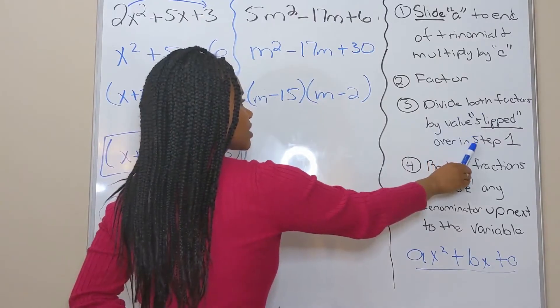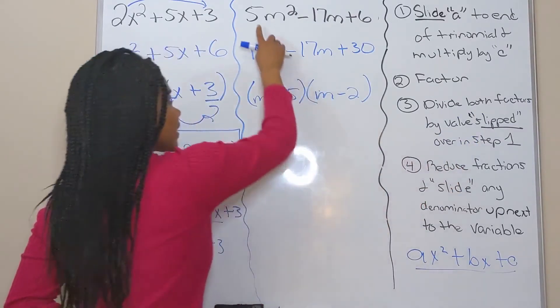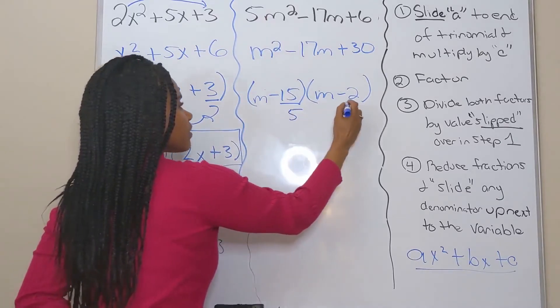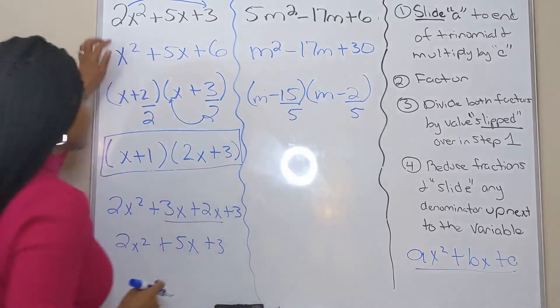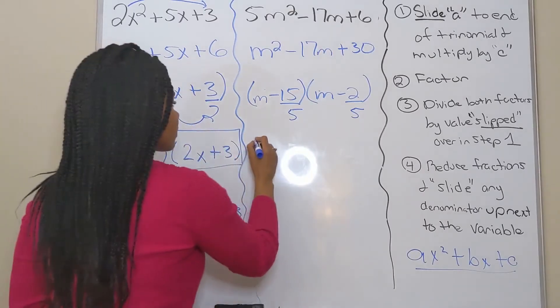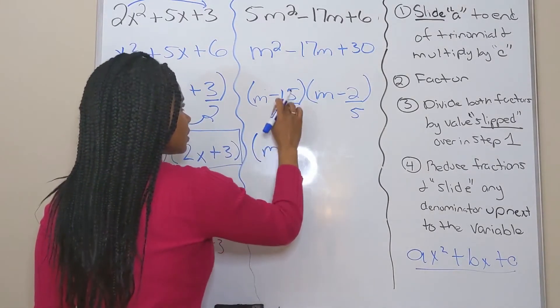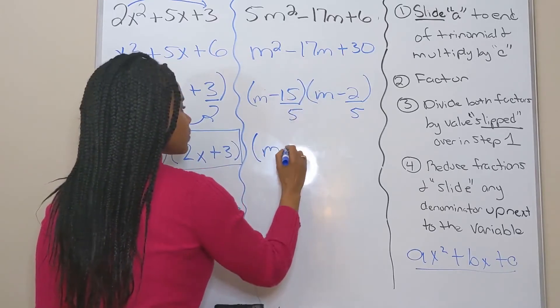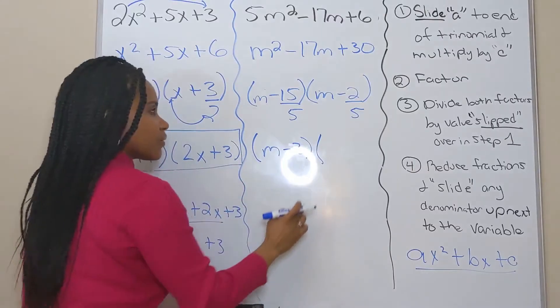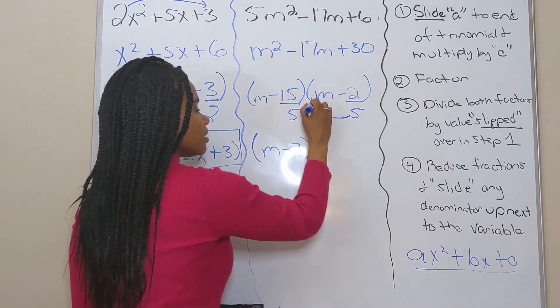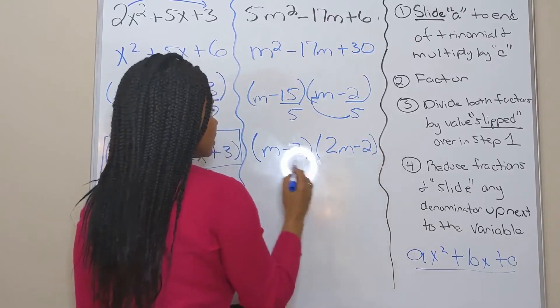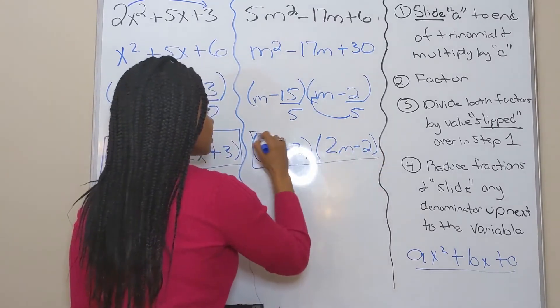All right, divide both factors by what I slipped over from step one. I slipped over the five, so I want to divide both factors by five, just like I slipped over or divided both of these by two. Reduce. 15 over five reduces to three. Two fifths, I cannot reduce it anymore. So I just slide it up. So m minus two. And I have factored this expression.